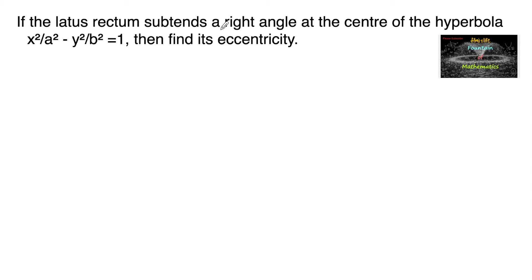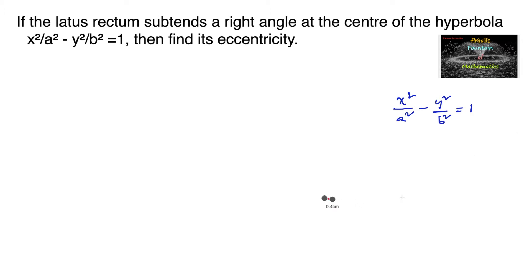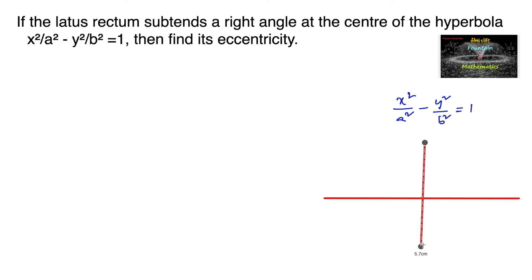If the latus rectum subtends a right angle at the center of the hyperbola x² upon a² minus y² upon b² equals 1, then find its eccentricity. So given here is a standard form of hyperbola whose x-axis is the transverse axis and y-axis is the conjugate axis.